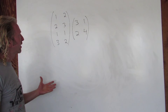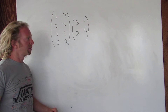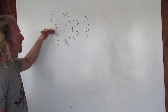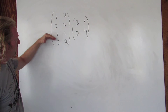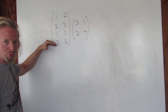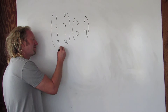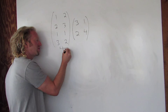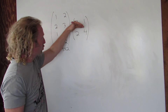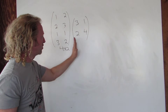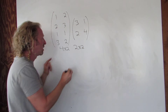What's up? So in this problem we have two matrices and we're going to multiply them. This matrix here has one, two, three, four rows and one, two columns, so this is a four by two matrix. This matrix here has two rows and two columns, so this is a two by two matrix.